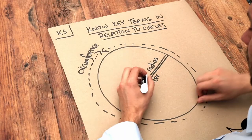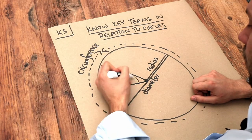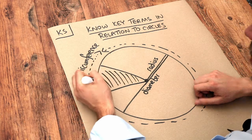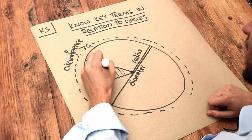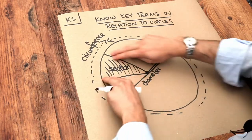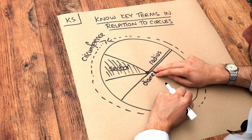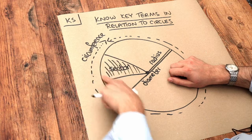Now there's a few more terms we need to know. If I have two lines like this and I've got this area in the middle, like a pizza slice, that is known as a sector of the circle. So a sector is like a pizza slice and it's basically the area between two radii of the circle and the circumference.